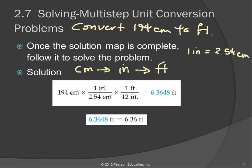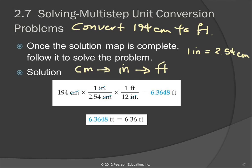There are also mistakes that can be made when you enter that into your calculator. What I recommend doing is going left to right like we read — left to right, top to bottom. So 194 would be times 1 divided by what's on the bottom, 2.54, times 1 divided by 12, equals. Your calculator should show you something like that. You can also do 194 divided by 2.54 divided by 12 equals.